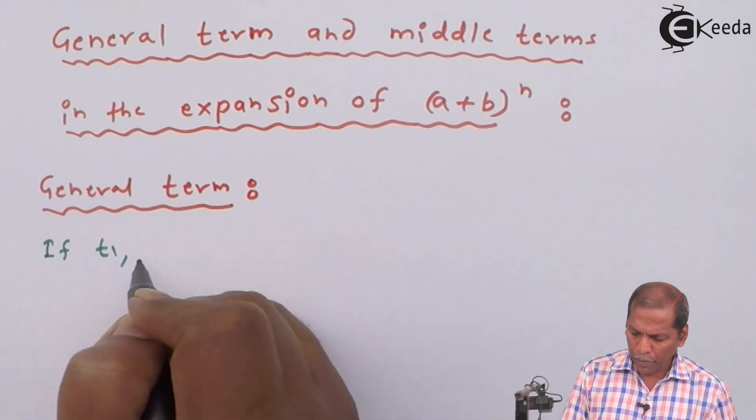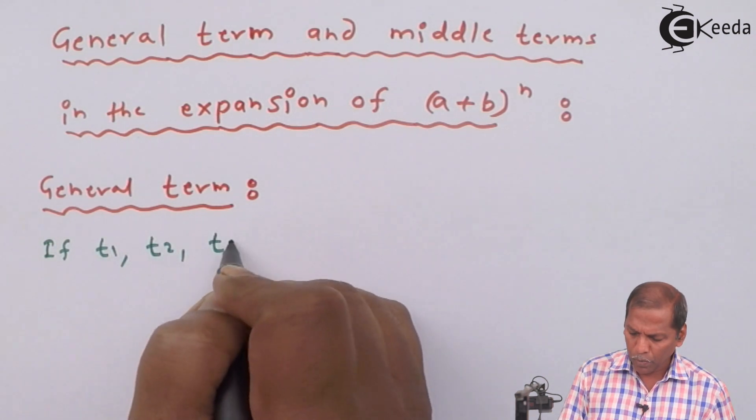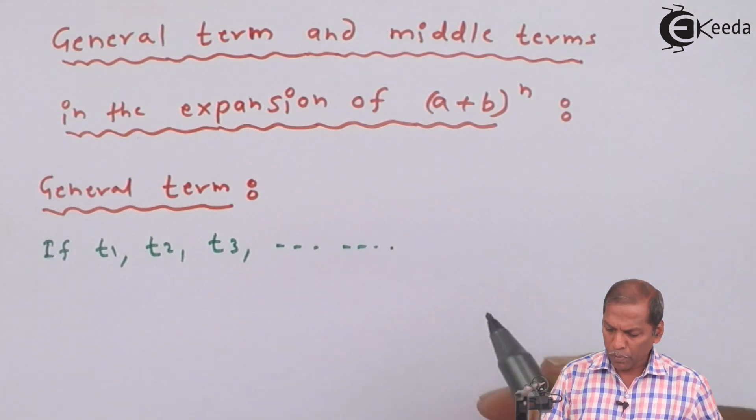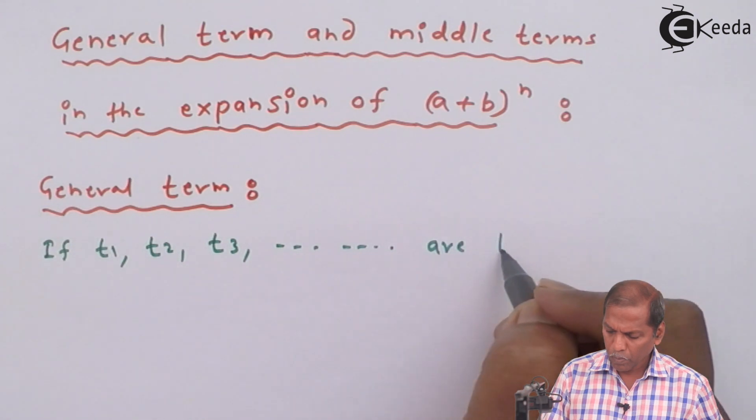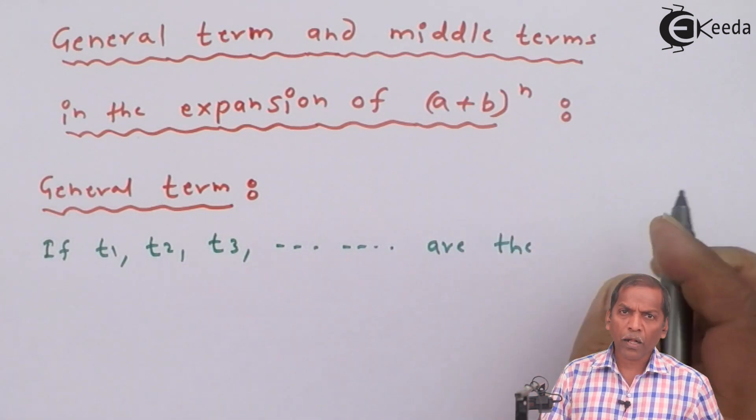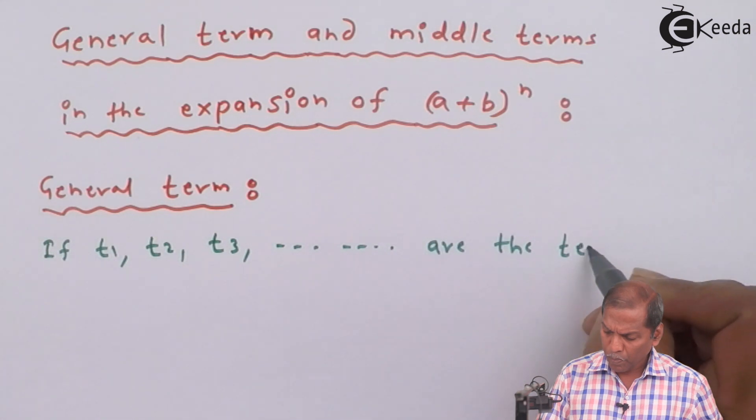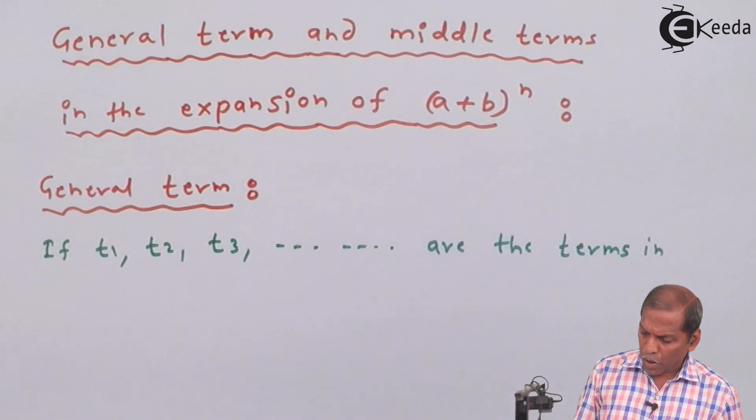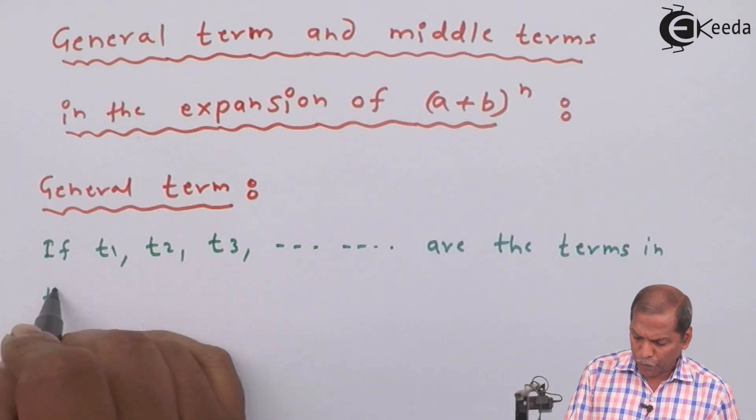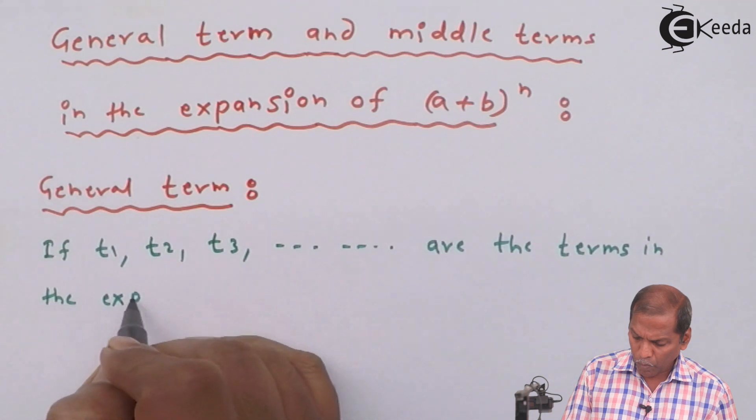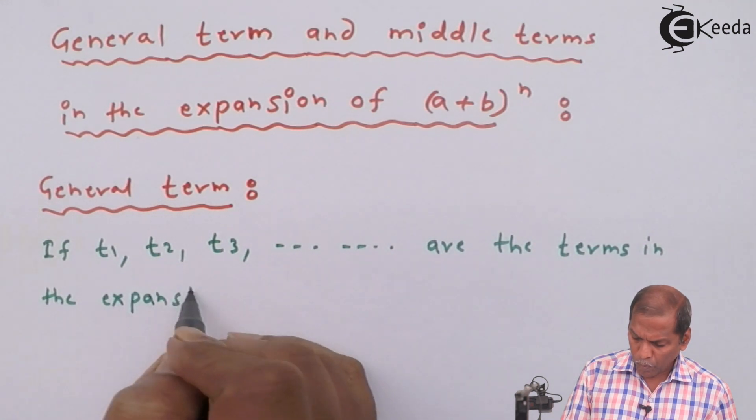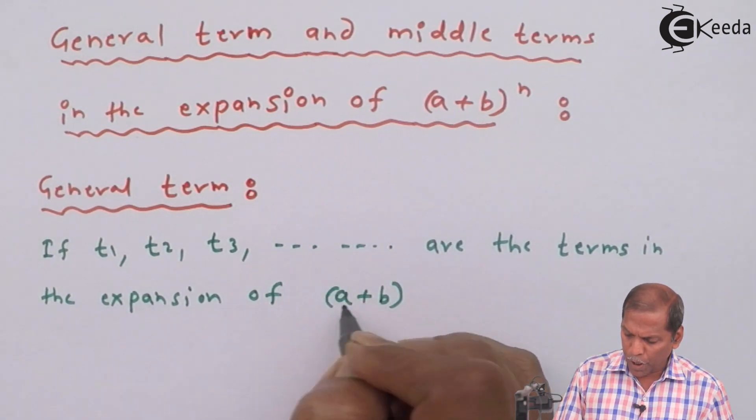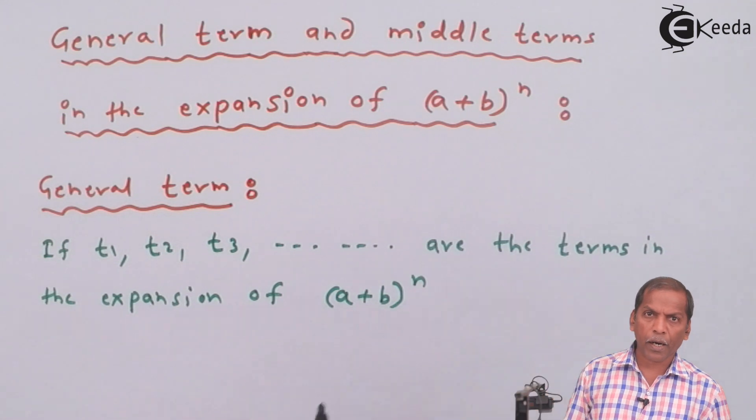If T1, T2, T3 going on, are the terms in the expansion of A plus B whole to the power n.